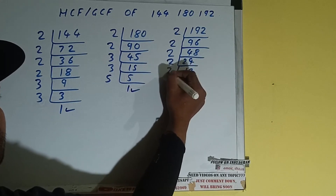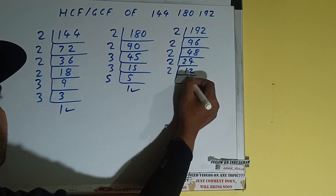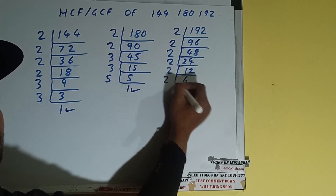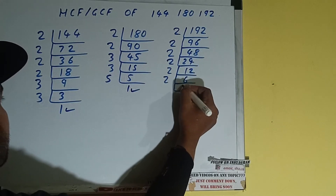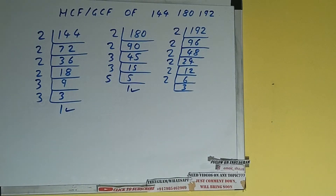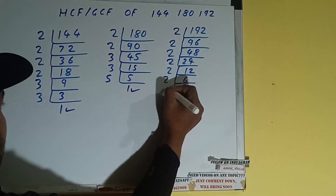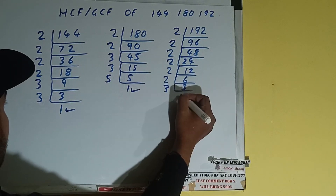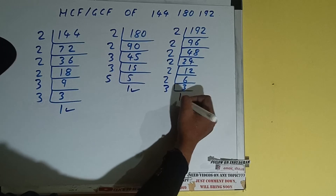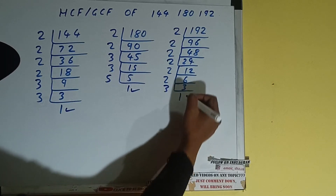24 is again divisible by 2, giving us 12, again divisible by 2 giving us 6, and again divisible by 2 giving us 3. Now 3 is not divisible by 2 because it is an odd number, and it is also a prime number, so it is only divisible by itself, that is 3. Once we do so we'll get 1, and we are done.